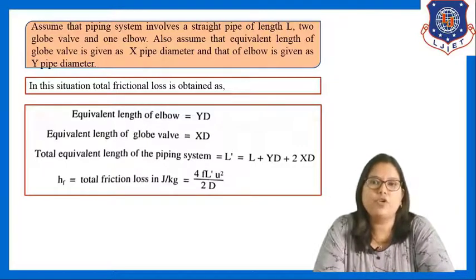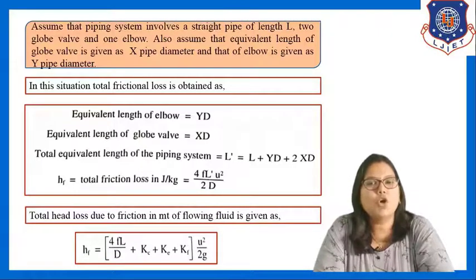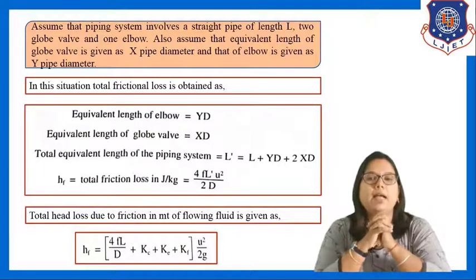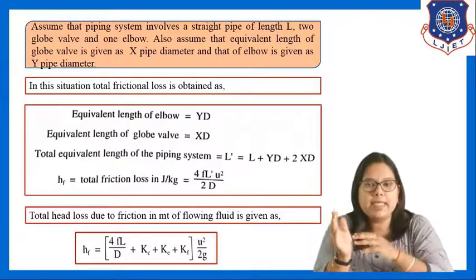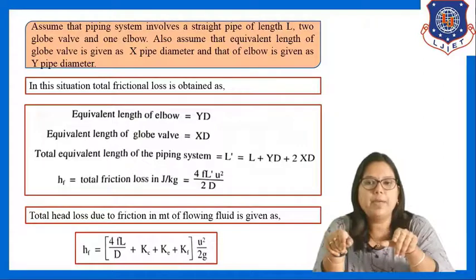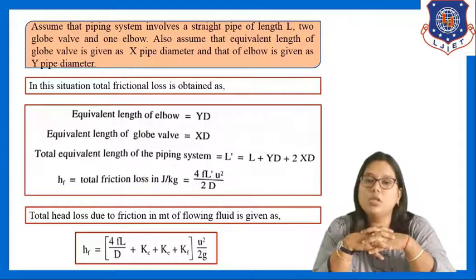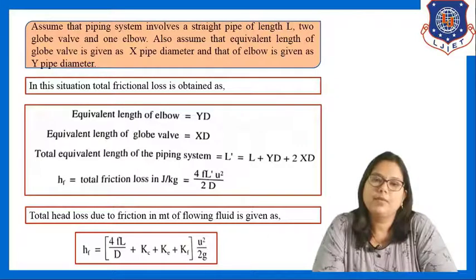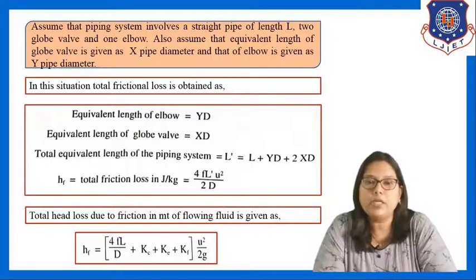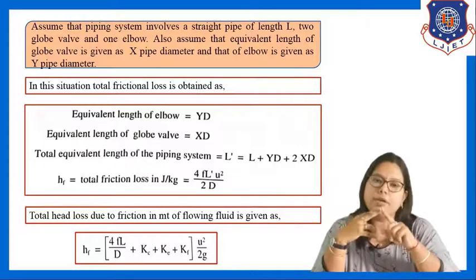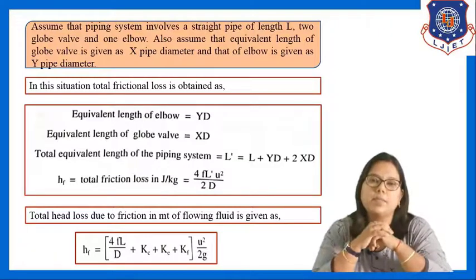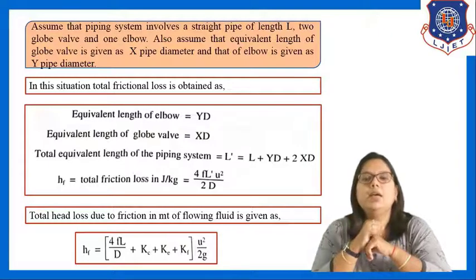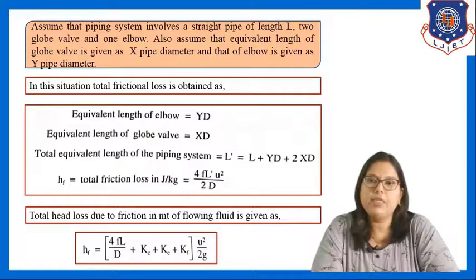Total friction loss is 4f·L'·u²/2d. The total friction loss in meters of flowing fluid is: Hf = [4fL/d + Kc + Kf + Ke] · u²/2g, where g is included because the loss is expressed in terms of head (meters of flowing fluid). This is the total friction loss for a system including straight pipe, sudden contraction, sudden expansion, and pipe with fittings and valves, written in terms of equivalent length.